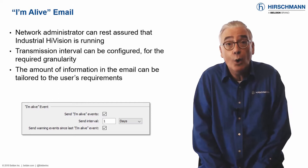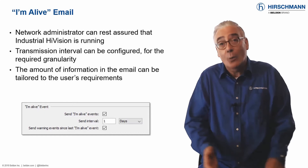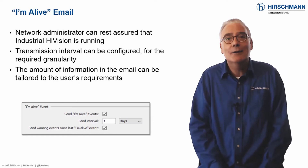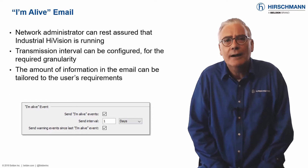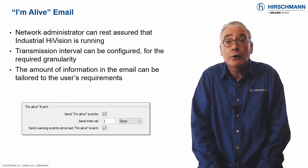There are many ways that Industrial HiVision can notify you or your colleagues about network problems. See the event handling video for more information. But all these techniques rely on one thing: Industrial HiVision must actually be running when the problem occurs. With the reliability of today's hardware, it's very likely that Industrial HiVision will not have stopped. But how can you be sure, especially if the application is running on a remote PC?